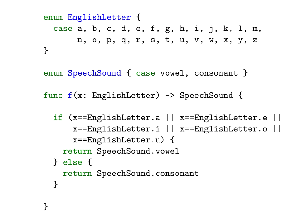One way to implement a function is by using a general purpose programming language. Here is example code using the Swift programming language that implements the function from the previous page. This code defines an enumeration called EnglishLetter that defines the domain of the function, an enumeration called SpeechSound that defines the range of the function, and a function called f that maps each item from the domain to exactly one value from the range.